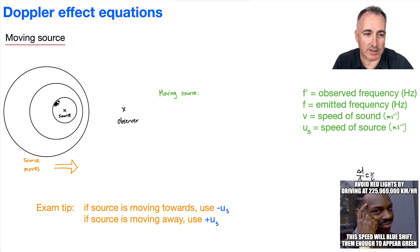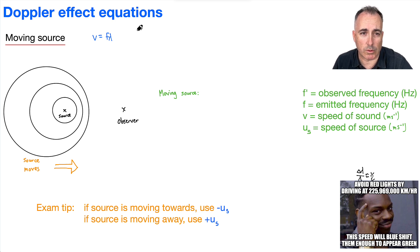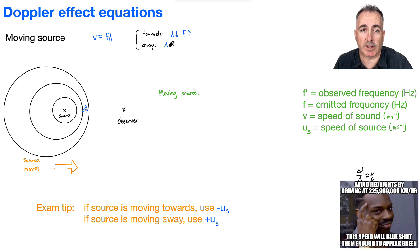So if we have a moving source heading towards the observer, let's remind ourselves of the basics. The wave equation is V equals F times lambda. If something is coming towards the observer, the wavelength is going to be smaller, which means the frequency will be higher. By contrast, if it's going away, the wavelength will increase and therefore the frequency will decrease. This is really important to remind ourselves of.